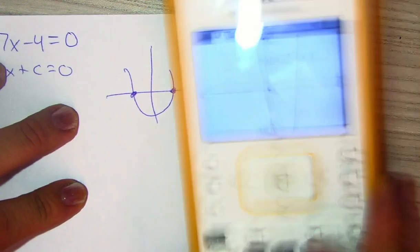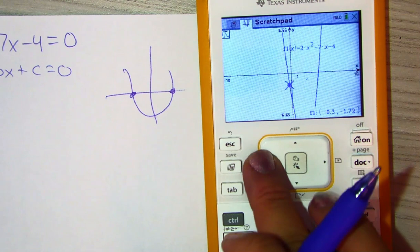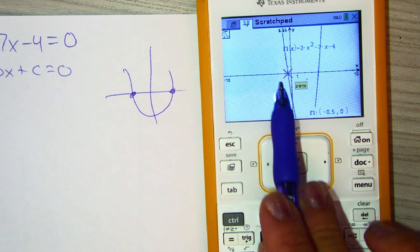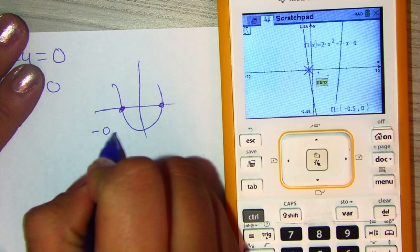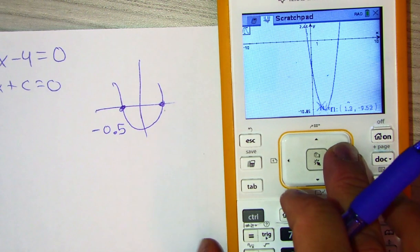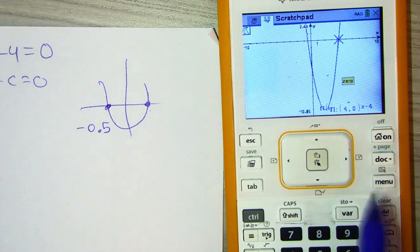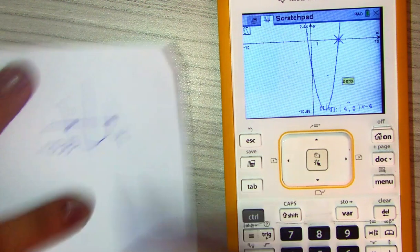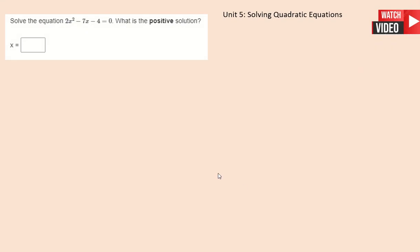So we can trace these values for specific numbers. So right here it says that this left one is negative 0.5. And then this right one, let's go ahead and find it. It's at 4. So that is technically the work if we use the graphing method. The question is asking for the positive solution. The answer will be 4.